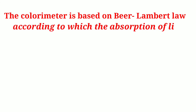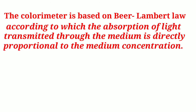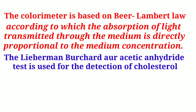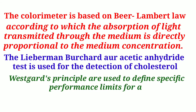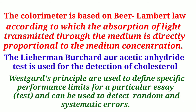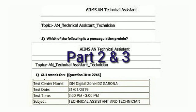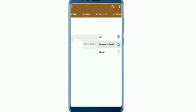According to Beer-Lambert law, the absorption of light transmitted through a medium is directly proportional to the medium's concentration. The Liebermann-Burchard or acetic anhydride test is used for the detection of cholesterol. Westgard principles are used to define specific performance limits for a particular assay and can be used to detect random and systematic error. So our correct option is Option C: Colorimeter is based on the principle of Beer-Lambert law. Thank you for watching.